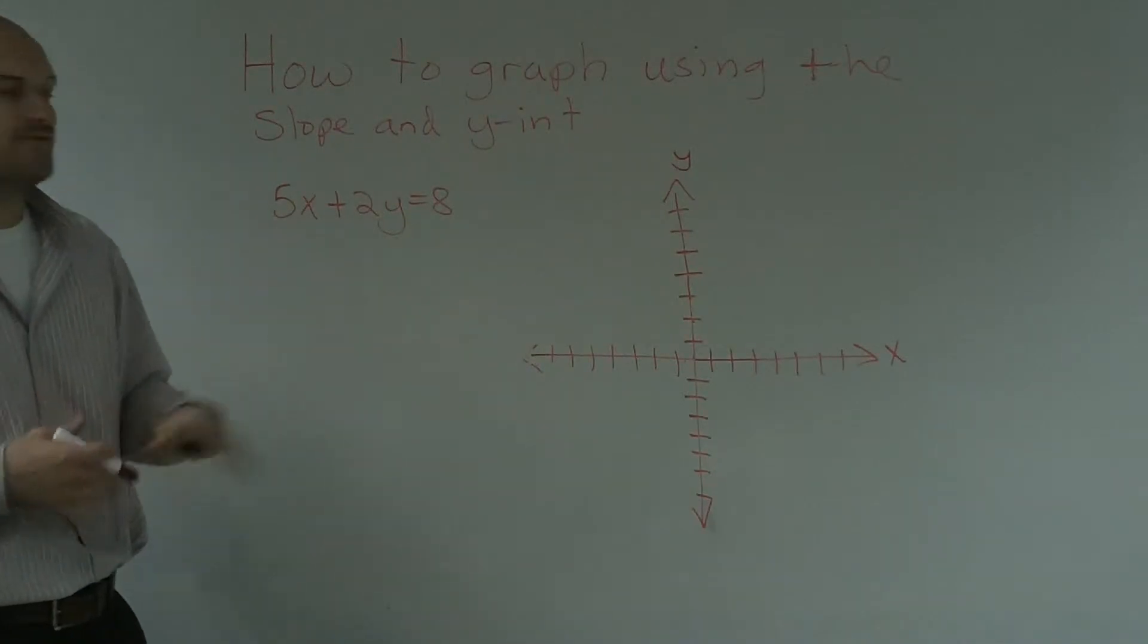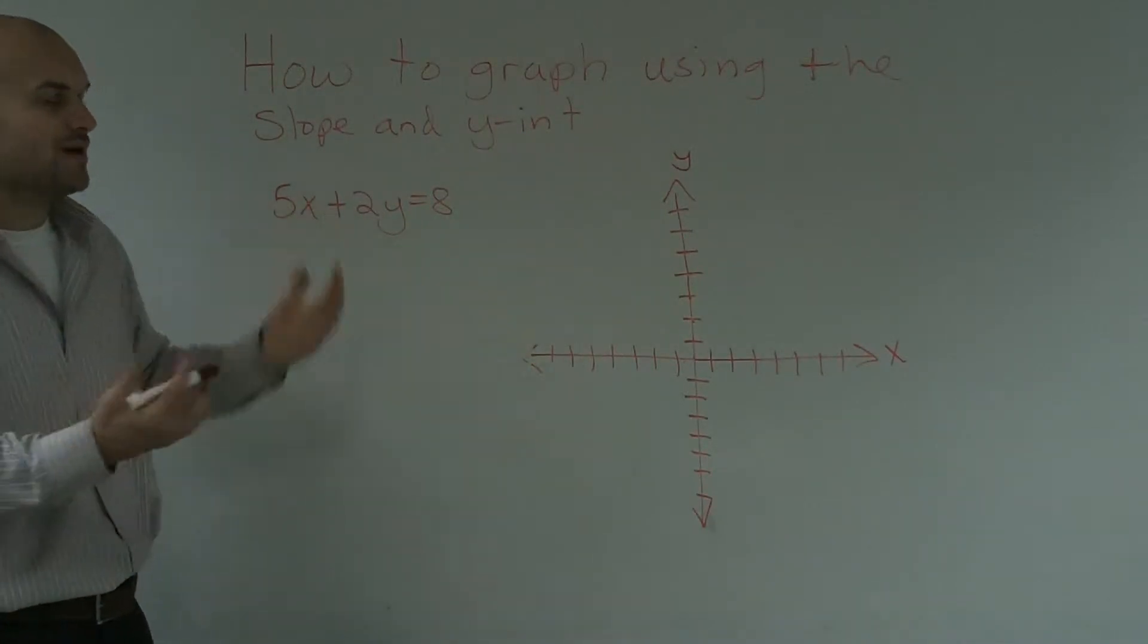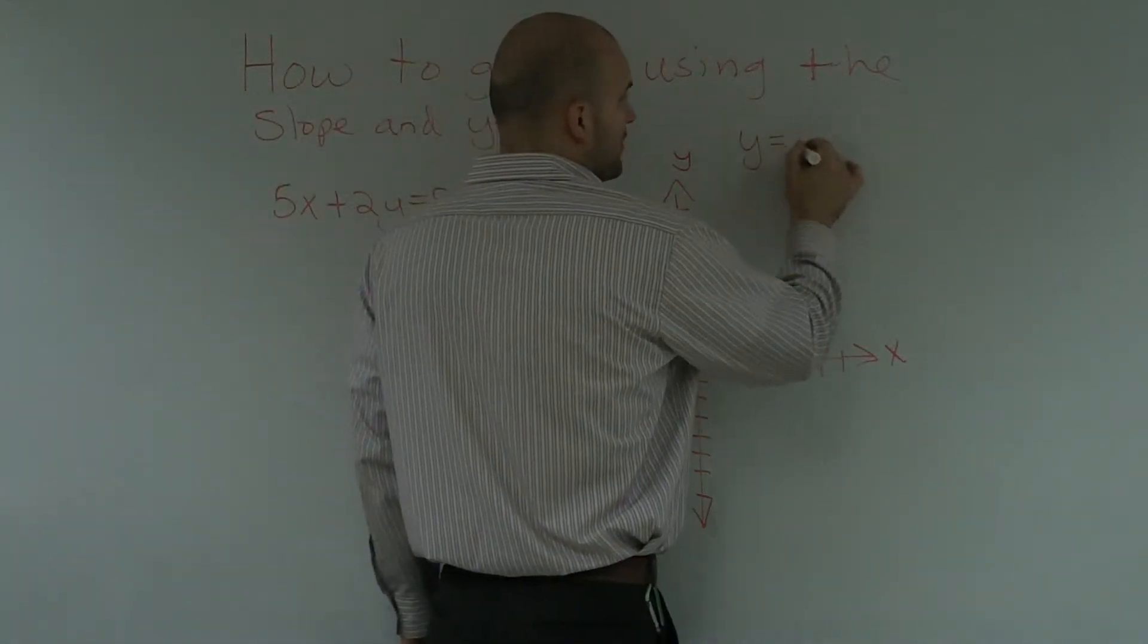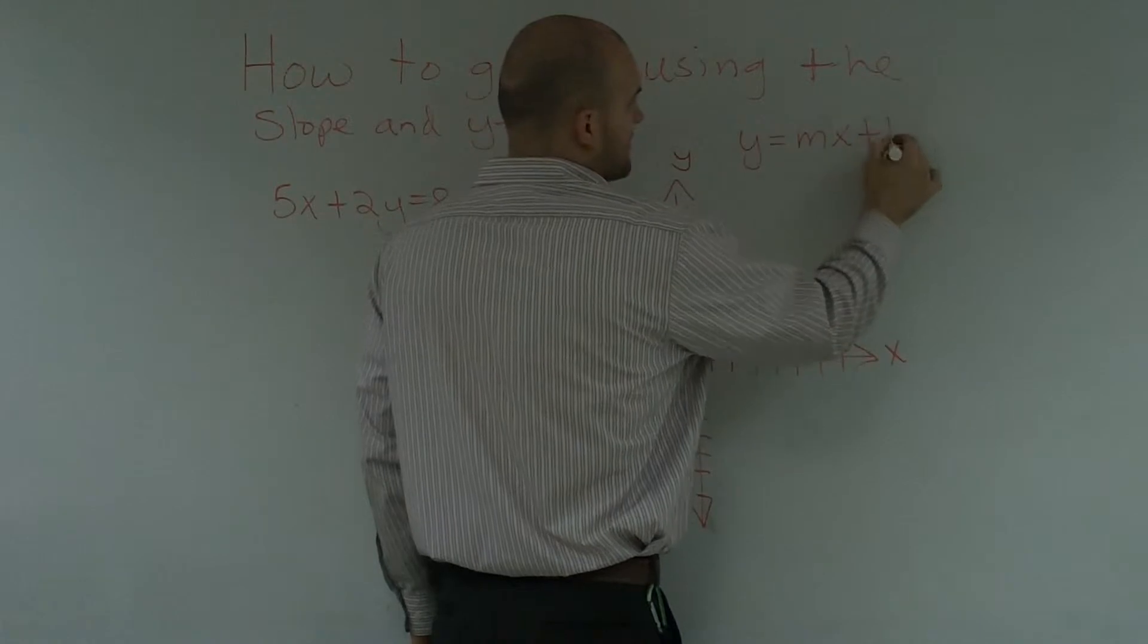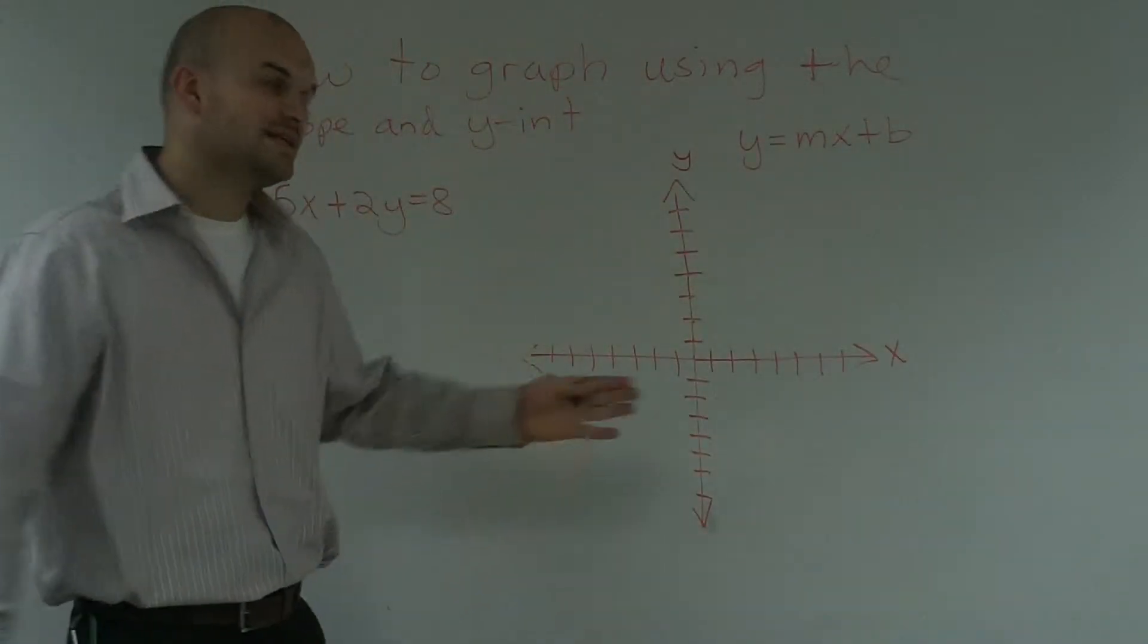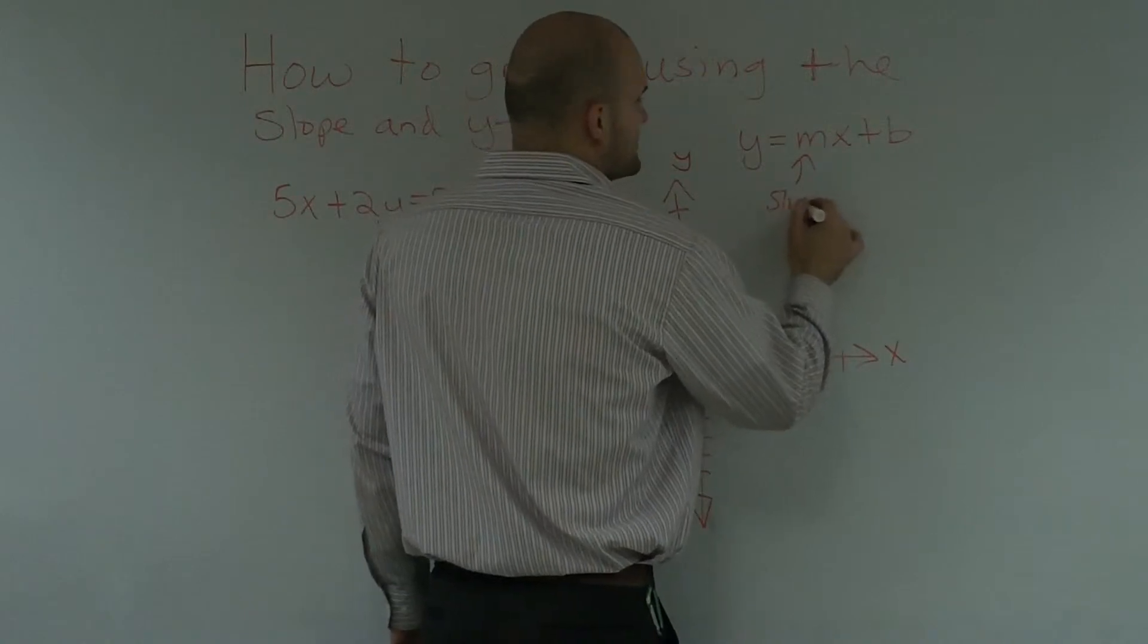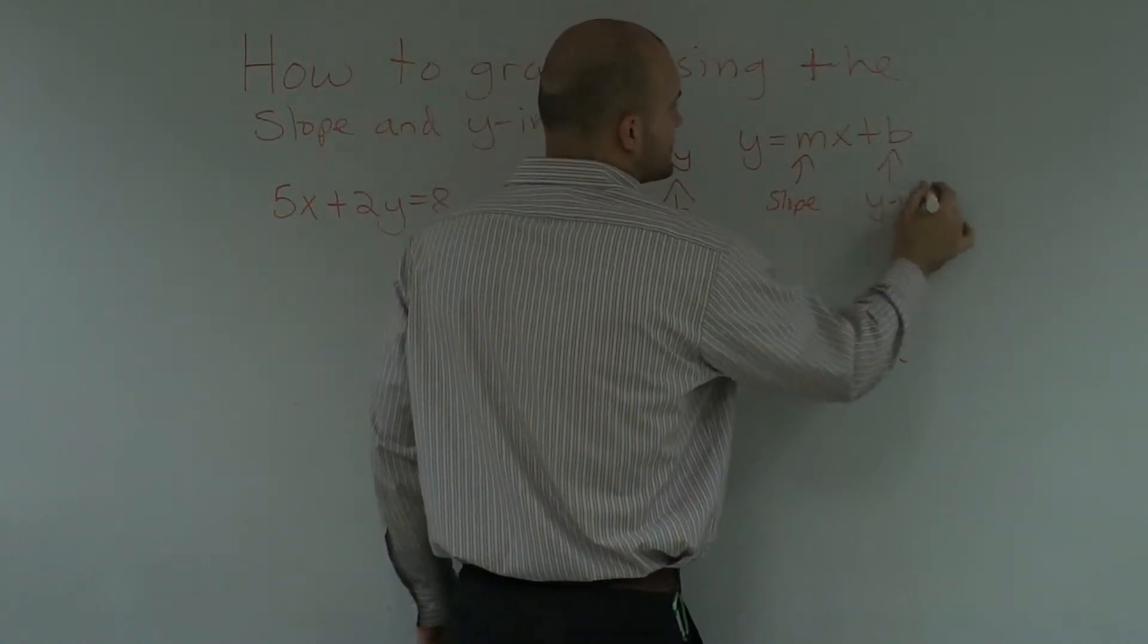So remember, first thing we need to do to graph using the slope and y intercept, you have to put it into slope-intercept form, which is y equals mx plus b. You guys need to remember this format and always remember that our m represents our slope and our b represents our y intercept.